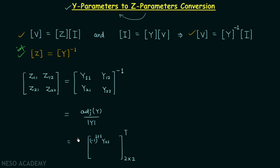Similarly, the cofactor of y12 will be −y21, and the cofactor of y21 will be −y12. In this way we obtain the matrix with elements replaced by their cofactors, and then we divide by the determinant of the matrix.